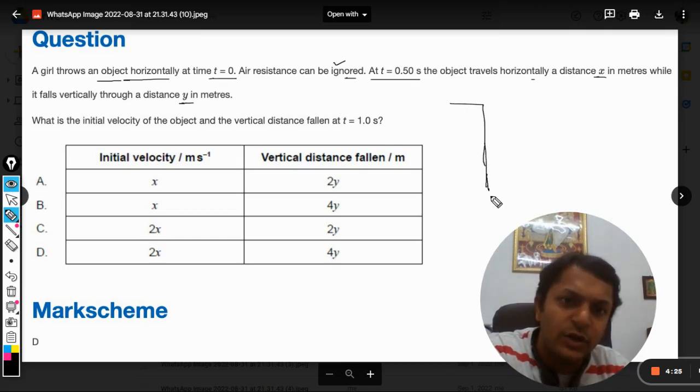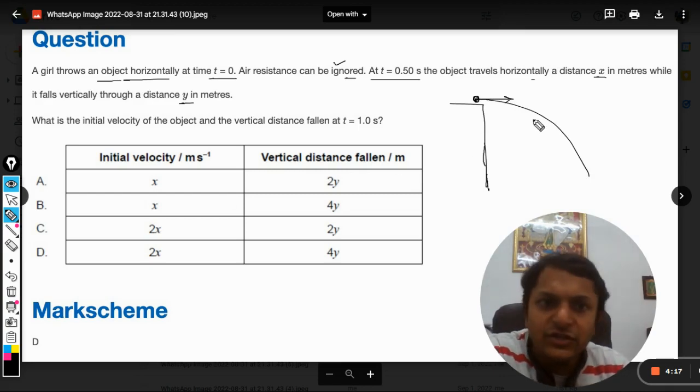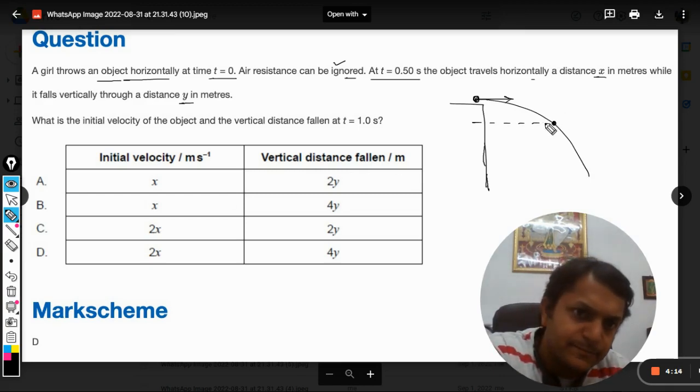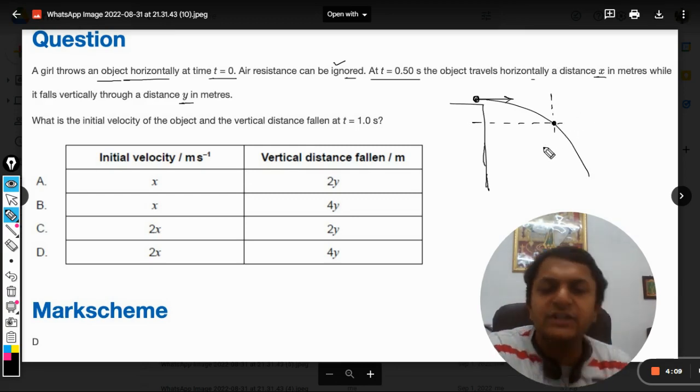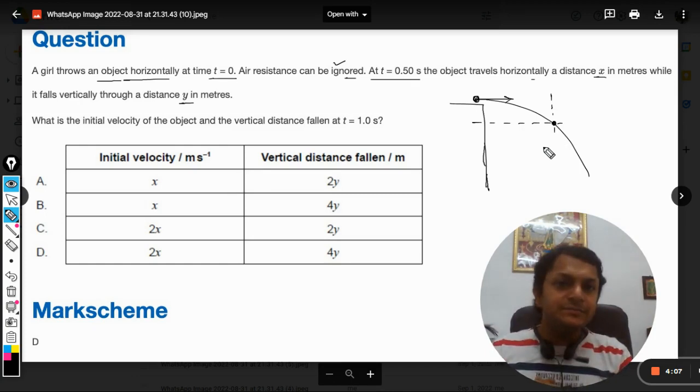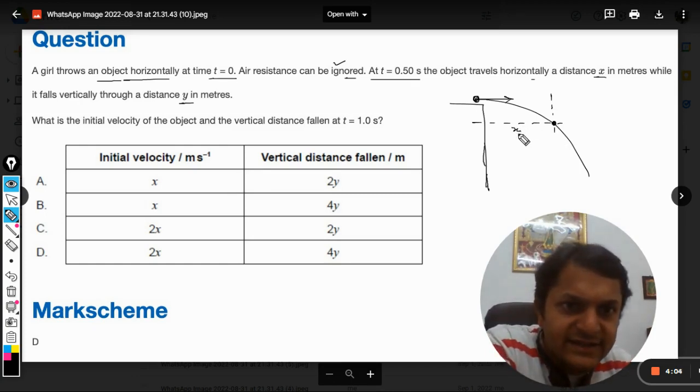Now let us say there is this object here and it is launched horizontally, so it moves like this. It has reached, let's say, this position. The horizontal distance traveled is x and the vertical distance traveled will be y.